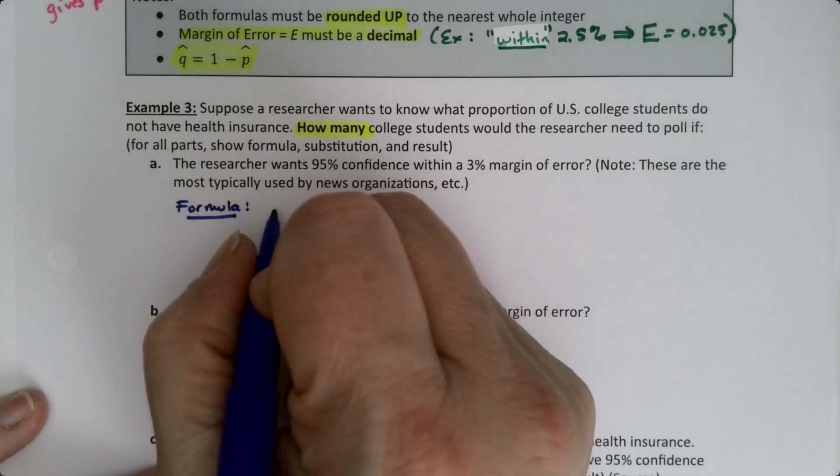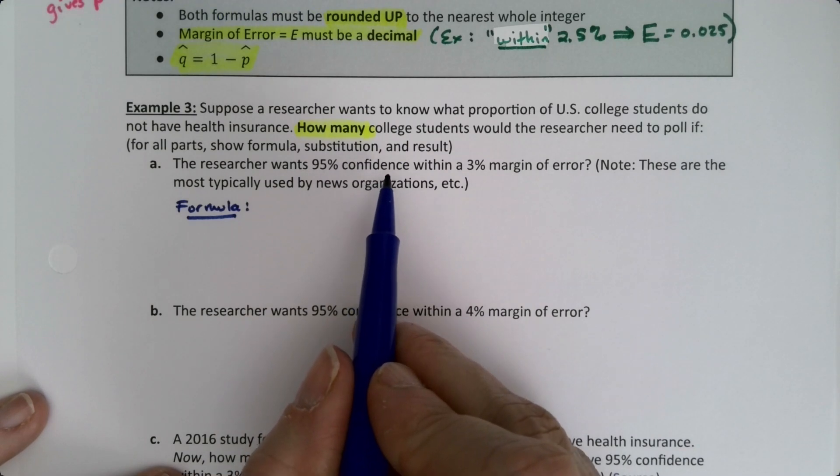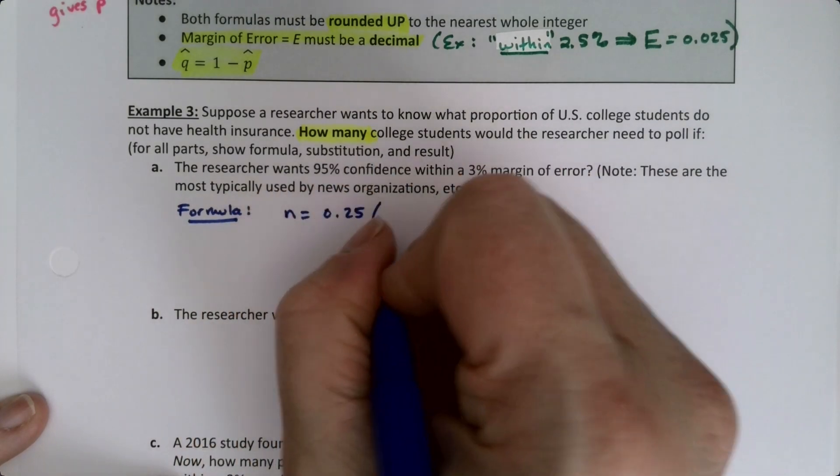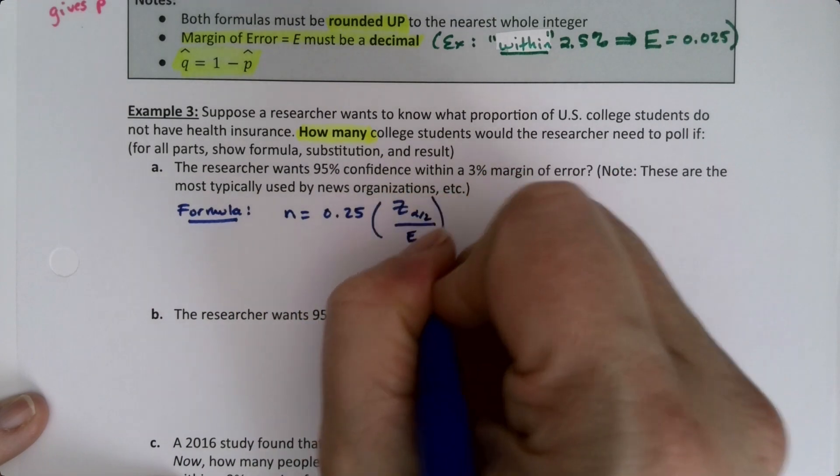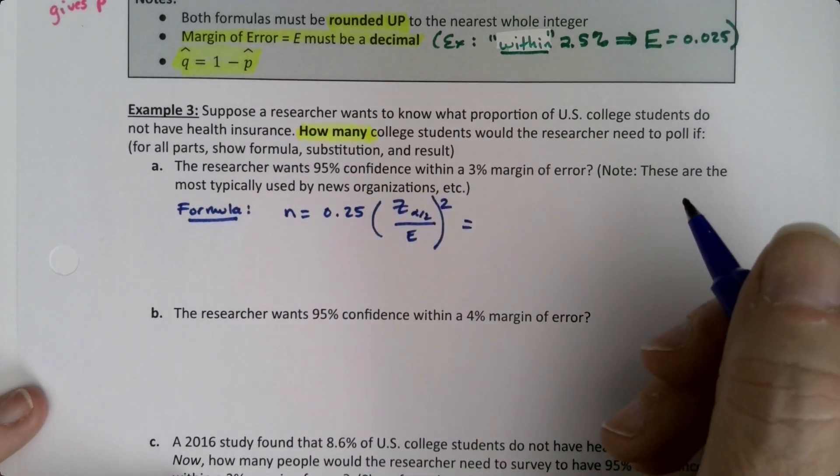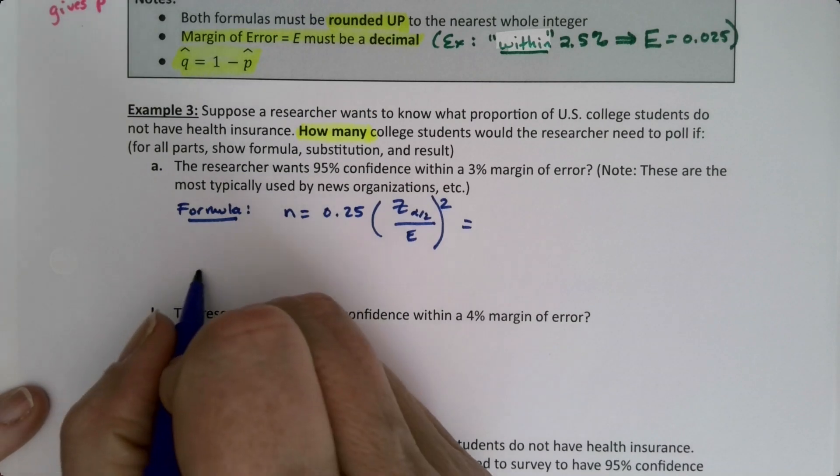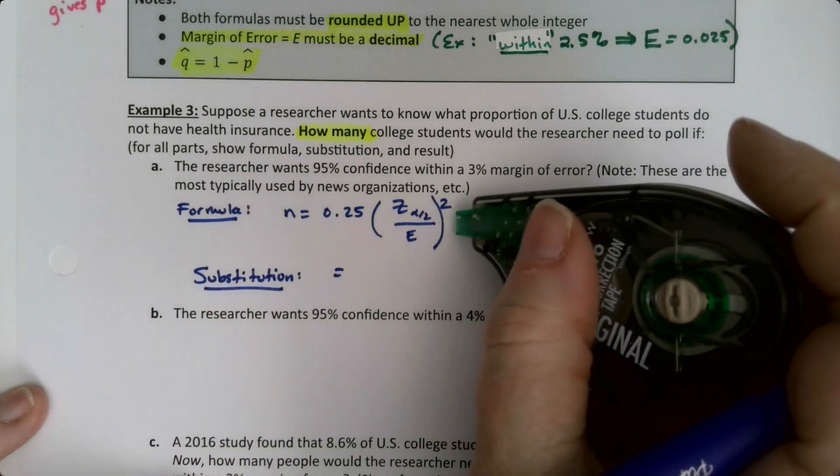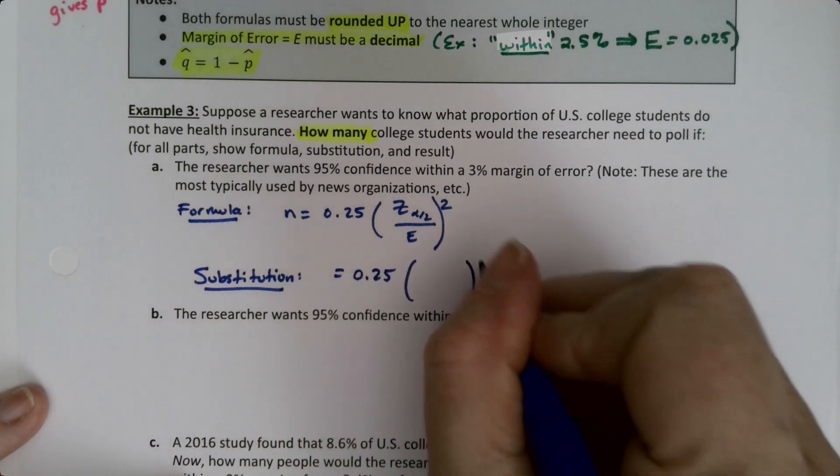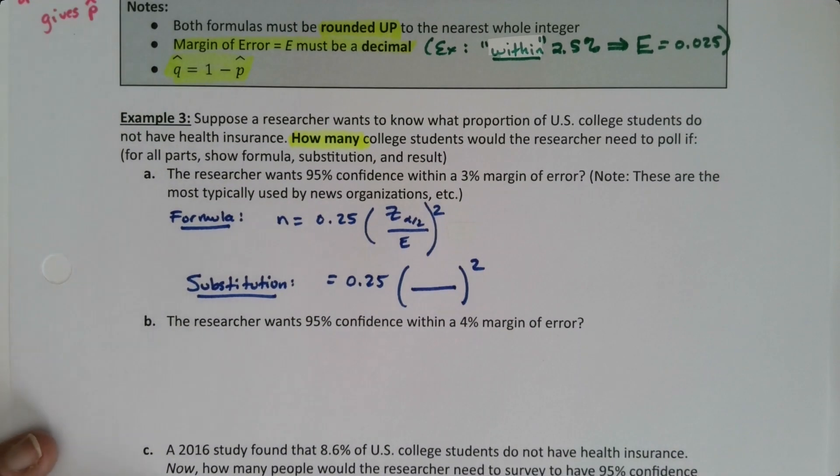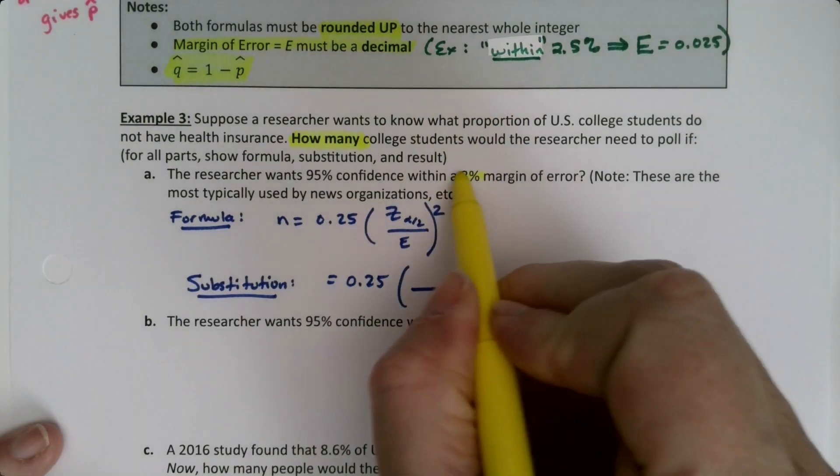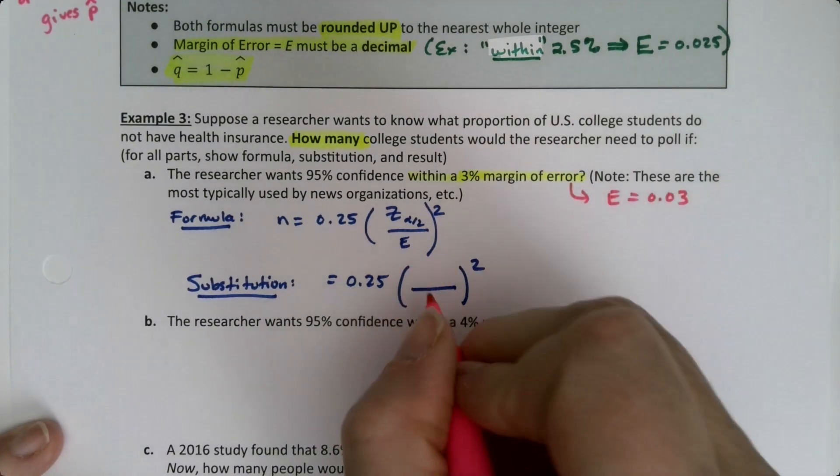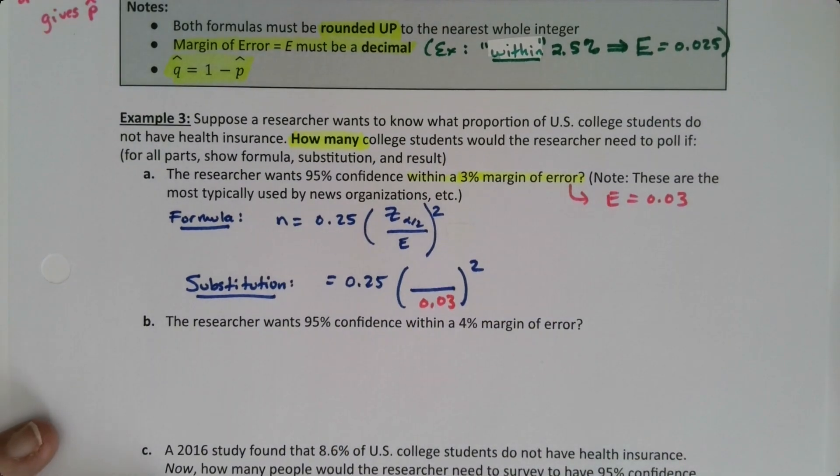So the formula - I don't have a prior estimate, I don't have an old survey or anything, so I'm going to have to say n equals 0.25 times z over error squared. The substitution: that's equal to 0.25. I know the error because it says we want a 3% margin of error, so that means error is 0.03.